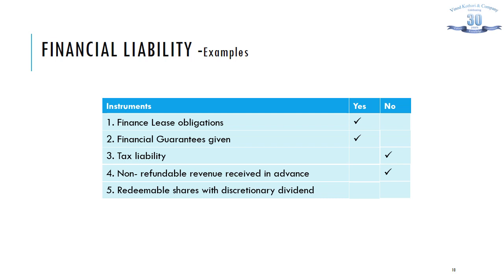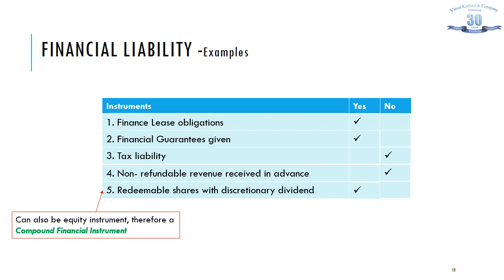Redeemable shares with discretionary dividends: the shares are redeemable, meaning the principal amount has to be paid, but dividends are discretionary. There is a contractual obligation to pay cash — the principal — so such instruments are liability instruments. However, they can also have an equity component, since there is a possibility that dividends may not be paid by the issuer; such a right in the hands of the issuer leads to an equity classification. When two components are combined together, what we have is a compound financial instrument.